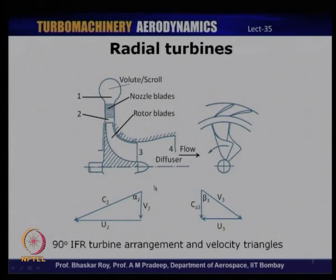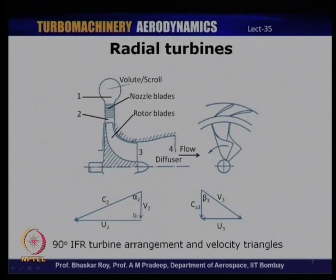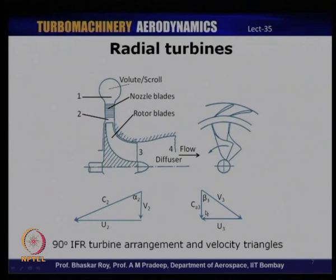Looking at the velocity triangles for the radial turbine: C2 refers to the absolute velocity leaving the nozzle, and flow enters the rotor blades at relative velocity V2 — radial because the blades are radial. U2 is the blade speed at the tip of the rotor. As the flow leaves the exducer, the relative velocity is V3, the flow is axial (denoted CA3), and U3 is less than U2 because of the difference in radii between stations 2 and 3.